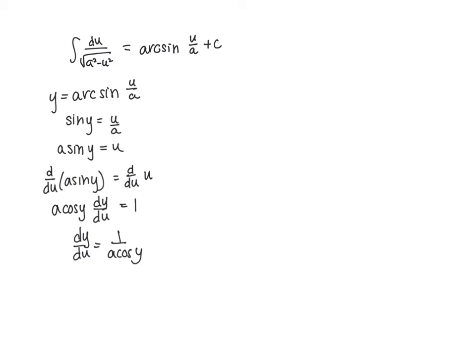My goal is to get this to look like the function I'm taking the anti-derivative of. What I'm going to do now is rewrite a cosine y in terms of the Pythagorean identity. I know that seems strange, but just the cosine of y — if we know that sine squared y plus cosine squared y equals 1, then solving for the cosine of y, we get — dealing with just where it's greater than 1 — cosine of y equals the square root of 1 minus sine squared y. So I can rewrite this as 1 over a times the square root of 1 minus sine squared y.